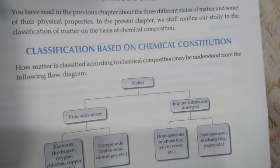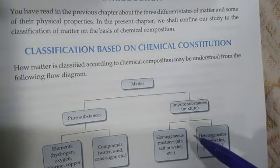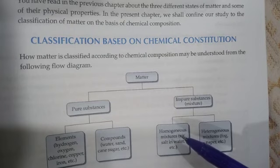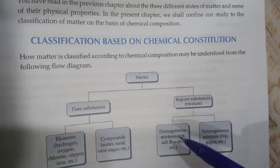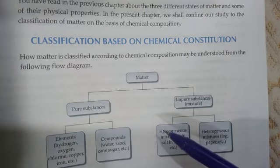What do we mean by pure substances and impure substances? All matter is made up of very small particles that are not visible to the naked eye. These particles are known as atoms. The word atom is derived from the Greek word 'atomos', which means indivisible. The smallest particle of a substance that may or may not exist independently is called an atom. When two or more atoms combine together chemically, this is called a molecule.